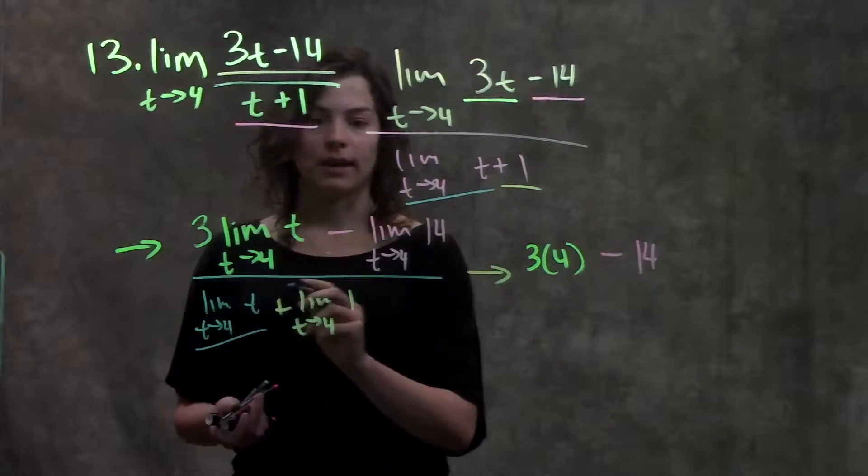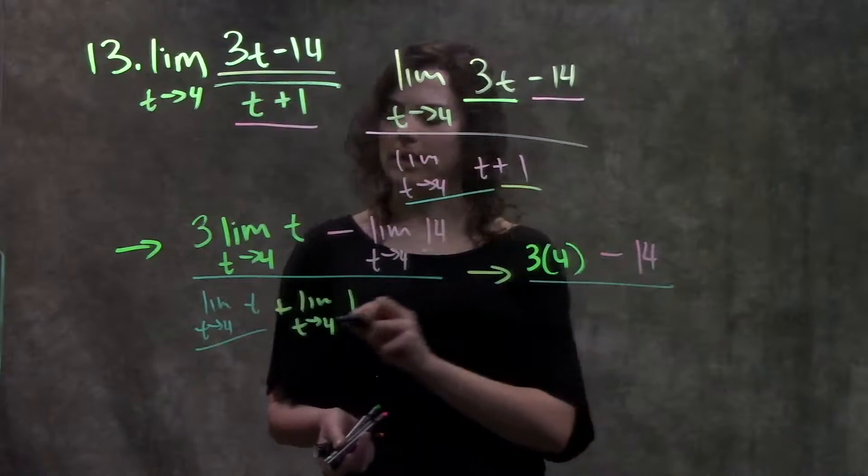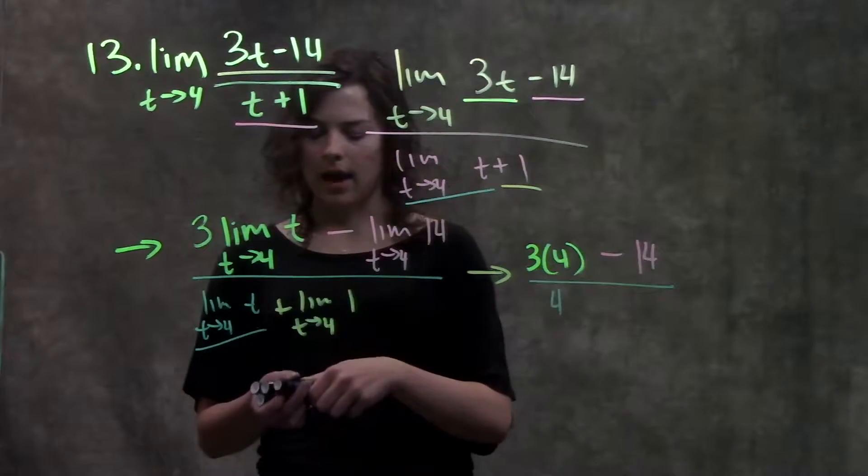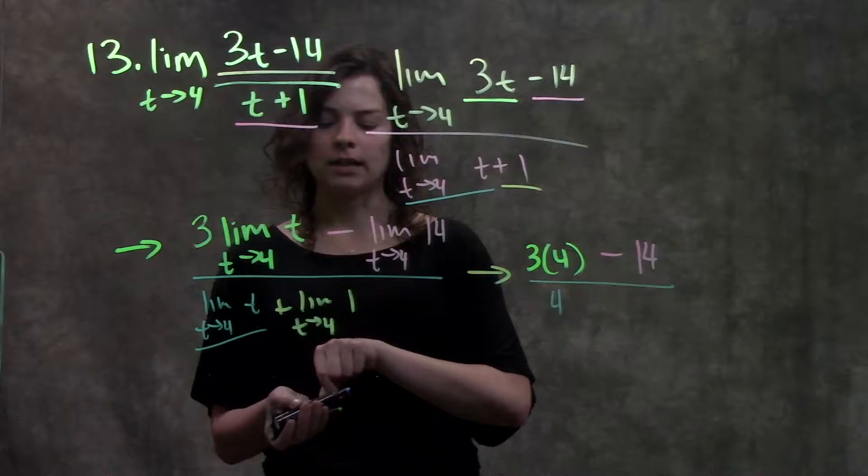Down here, I have just a variable again. So as t approaches 4 of t, that'll just be 4. And then plus, again, I have a constant.